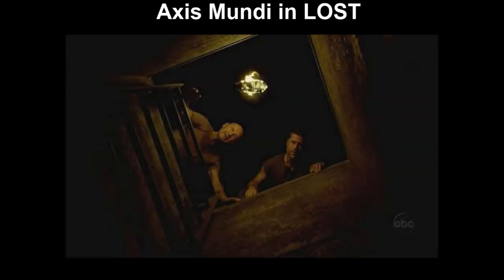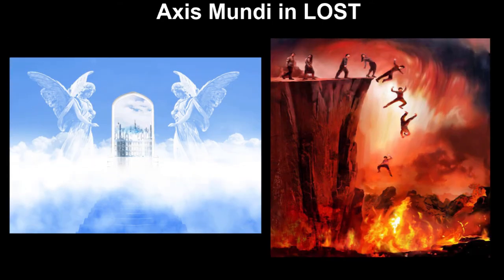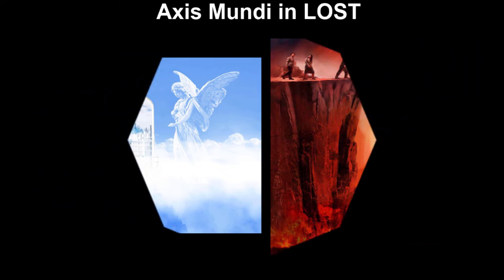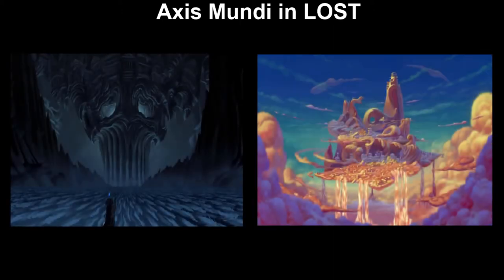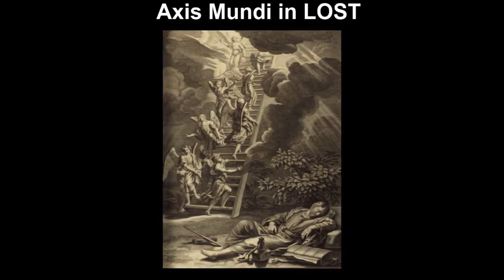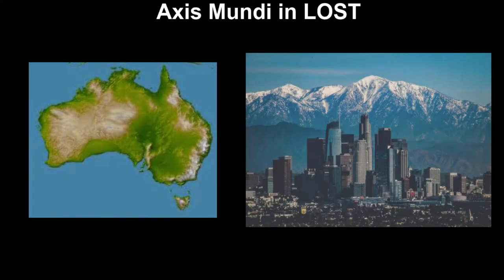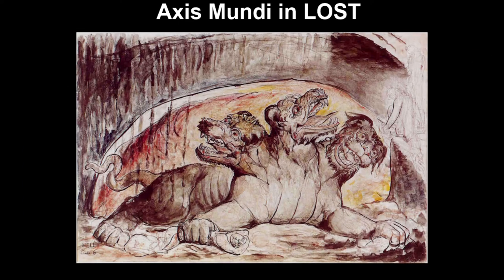The motif of a vertical journey has been with us since childhood. We know that Heaven is up and Hell is down. We've heard of Jack and the Beanstalk and Rapunzel in her tower. The heroes of Greek mythology must descend to Hades before they can ascend to Mount Olympus. The biblical Jacob dreamed of a ladder on which angels traveled up and down, and the passengers on Oceanic 815 were on their way from the land down under to the City of Angels.